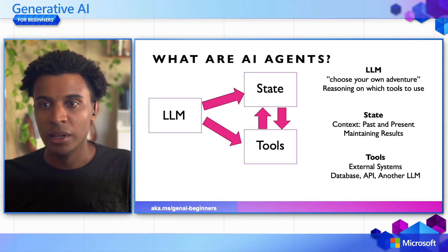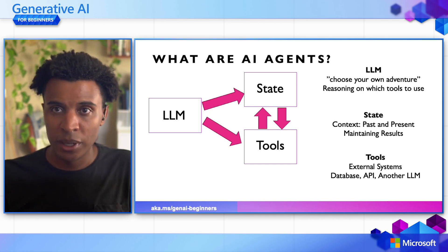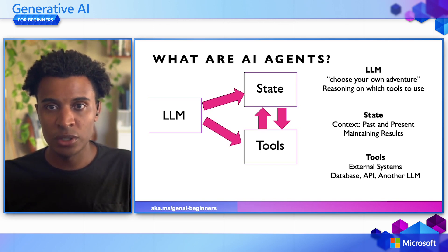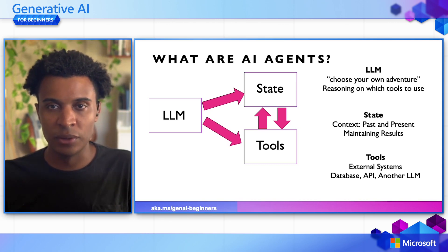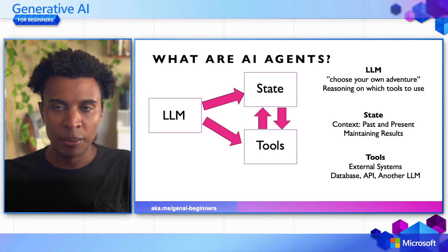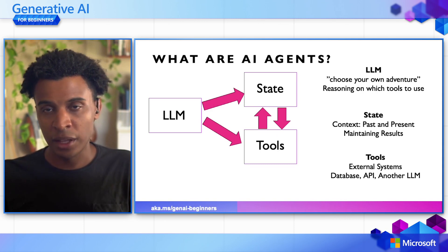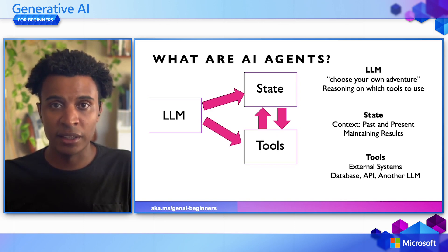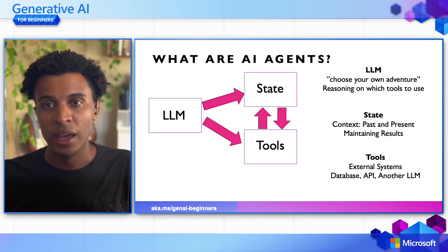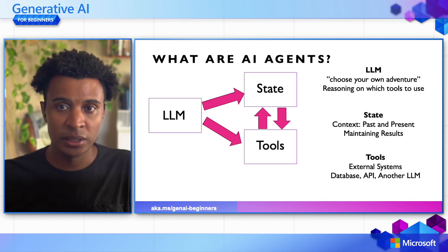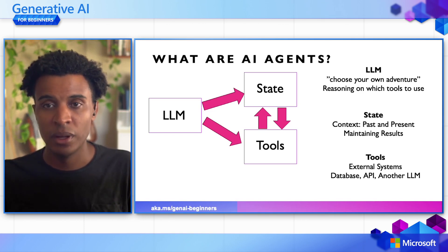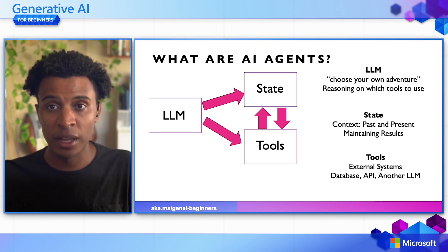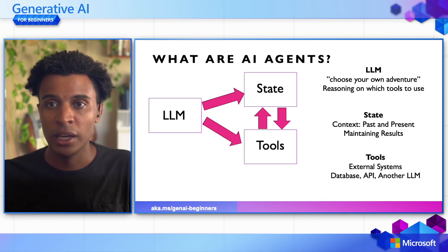With a large language model, it's like a choose-your-own-adventure game — it's reasoning and deciding which tools to actually use when interacting with users. Then we have state, which is the context of the conversation or interaction with users, or even other large language models, in terms of what's been received in the past and what it's planning to do next, maintaining those results so the user gets the task completed. And tools can be any external system — whether it's a database, an API, another large language model, or some code like a Python function — being utilized or interpreted by the large language model, which then executes the appropriate function.